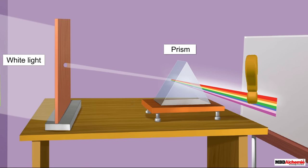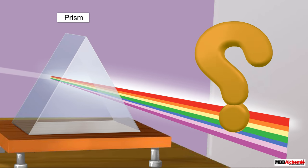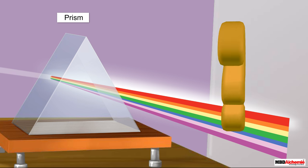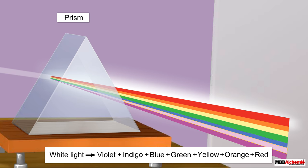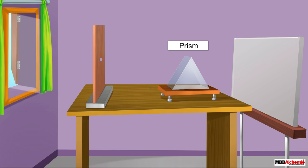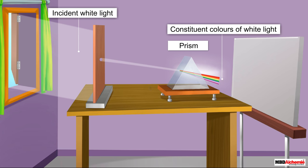The light coming from the sun was white light. Actually, white light consists of seven colors — violet, indigo, blue, green, yellow, orange, and red — which we see as the band of colors. When the white light from the sun falls on the prism, it splits into its constituent colors.